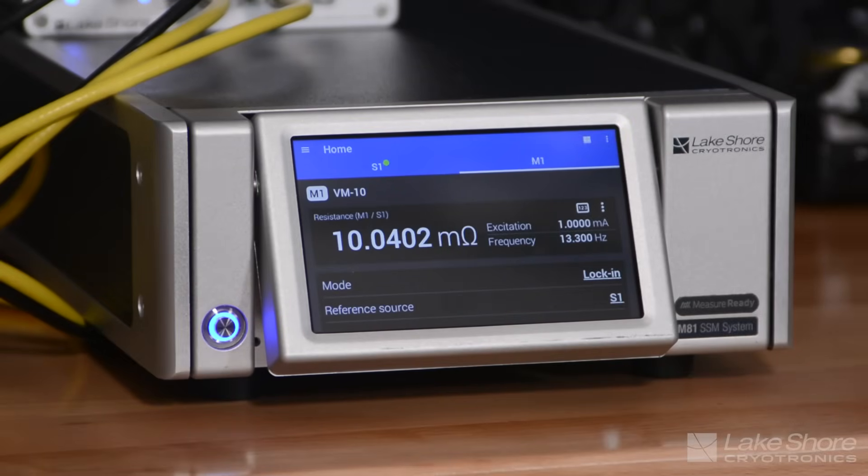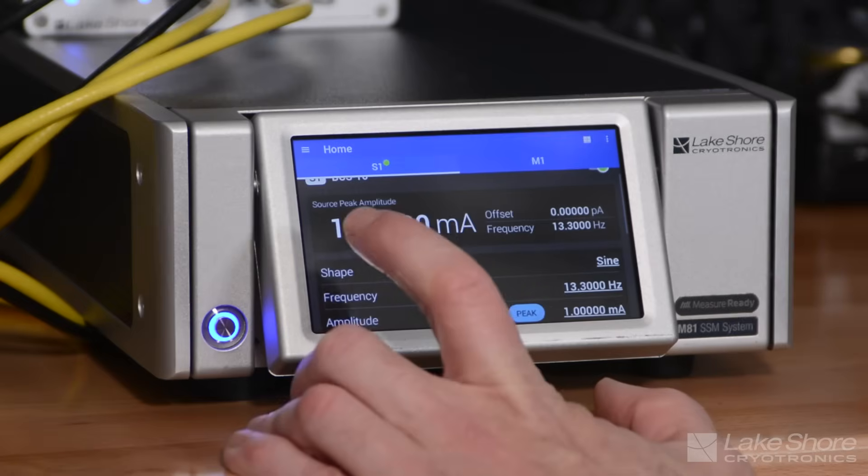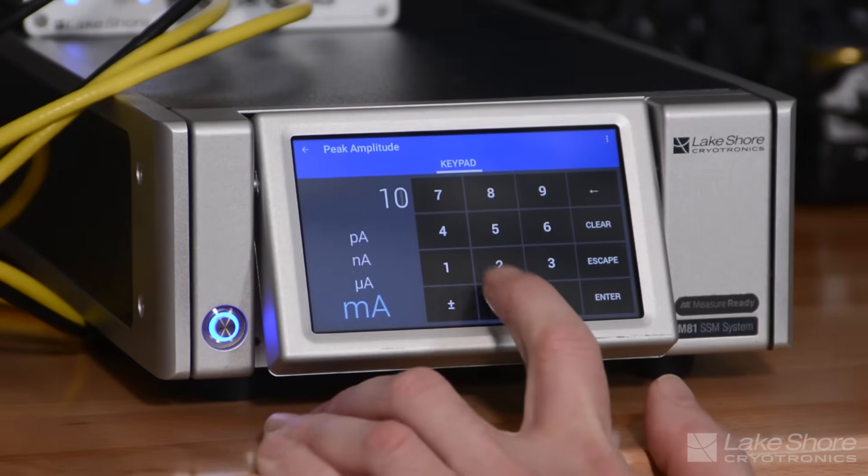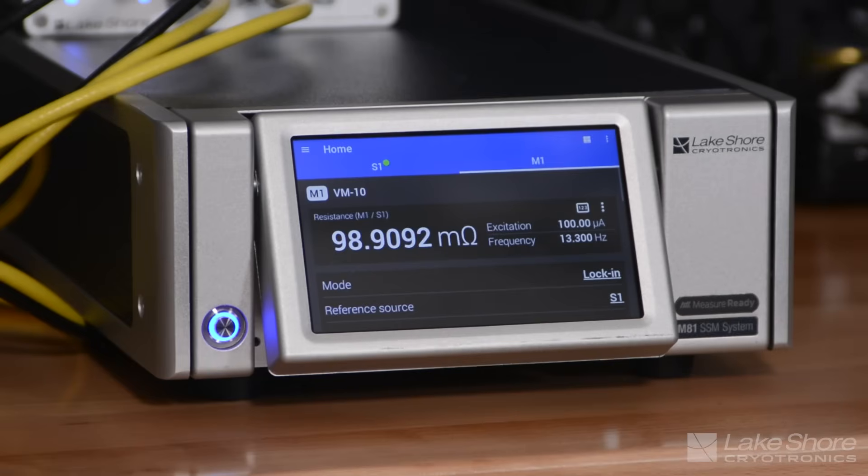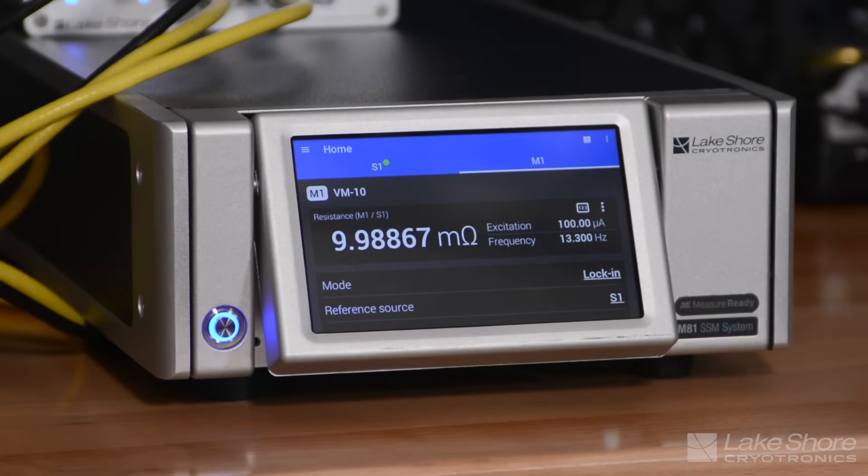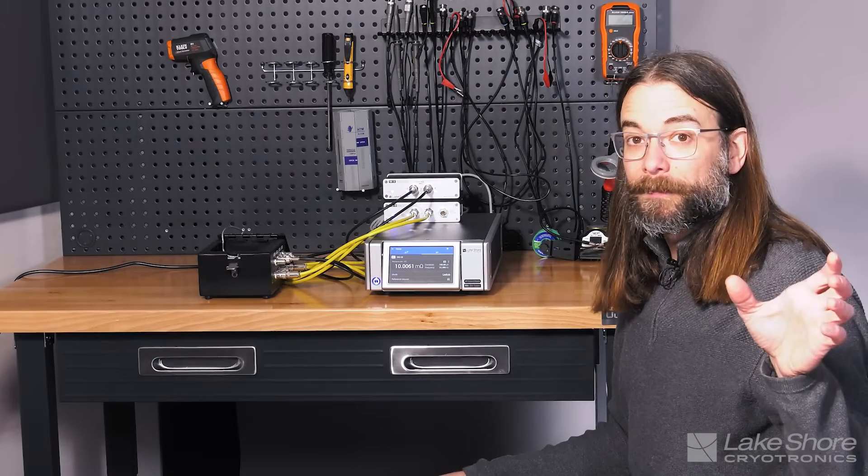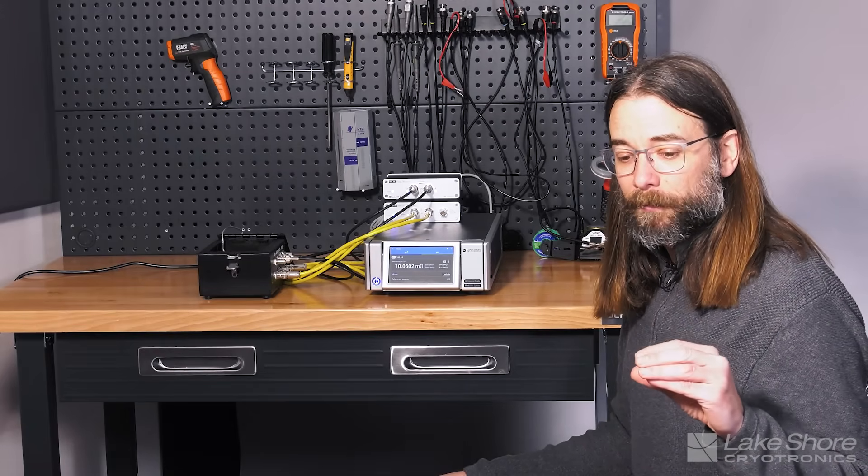But you can see now we're reading 10.04 milliohms, which is really an accurate reading for this particular device. And we're at 1 milliamp. So what happens if I drop it even further? Let's say I go to 100 microamps. And then we give it a little bit of settling time. And so now we're at 10 milliohms again. So we've started with 10 milliamps, where we had a fairly accurate measurement of that 10 milliohms.